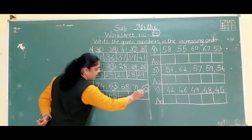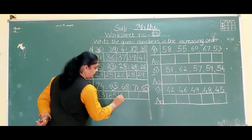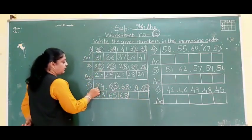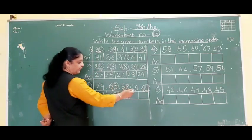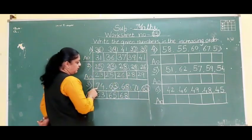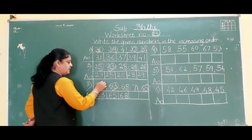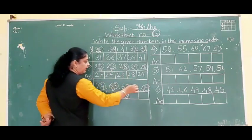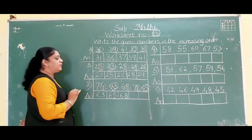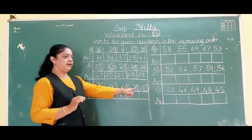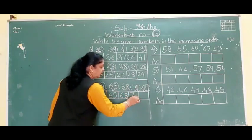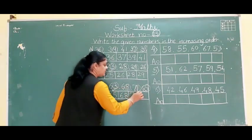Then 68. Now two numbers remain: 74 and 71. First digit is 7 for both, so we look at the second digit: 4 and 1. Which comes first? 1. So 71 comes before 74. And last is 74.